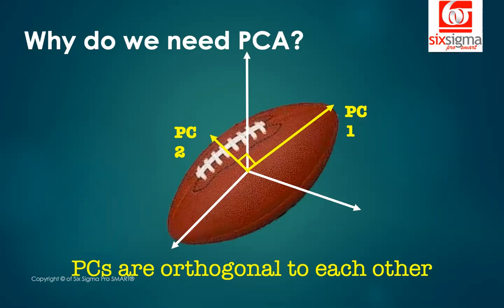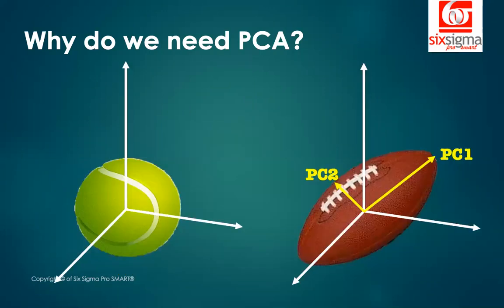We started with the idea that variables were correlated, which is why we wanted to do PCA. If the principal components were also correlated, there would be no point. So by design, principal components are always orthogonal to each other. The principal components are always extracted in descending order of importance — we call it eigenvalue. You may want to equate the spread as the information in the data. We want to capture the most important information by eliminating redundancy introduced by correlations between variables.